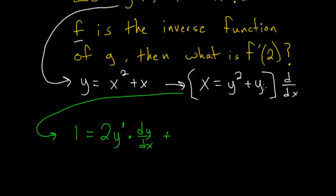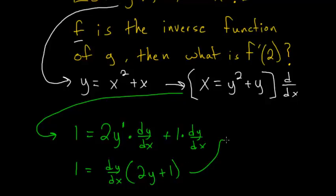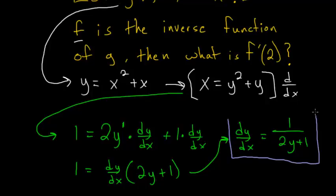We have to add the derivative of y, which is just 1 times dy dx. Now we just need to solve for dy dx, so 1 equals dy dx factored out, giving us 2y plus 1. Dividing each side by 2y plus 1, dy over dx equals 1 over 2y plus 1.